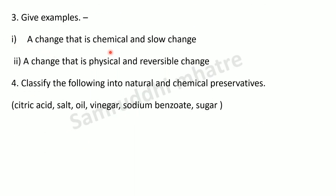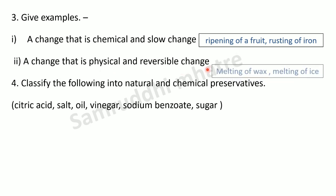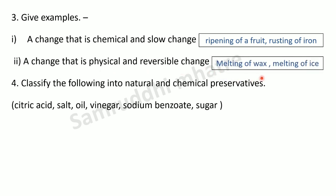Third question: give examples. First, a change that is chemical and slow — examples are ripening of fruit and rusting of iron. Next, a change that is physical and reversible — examples are melting of wax and melting of ice.